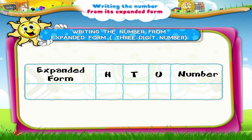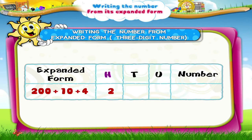Let us look at the expanded form of a 3-digit number: 200 plus 10 plus 4. For the place value 200, we write 2 in the hundreds place. For the place value 10, we write 1 in the tens place. For the place value 4, we write 4 in the units place. So, we get the number 214.